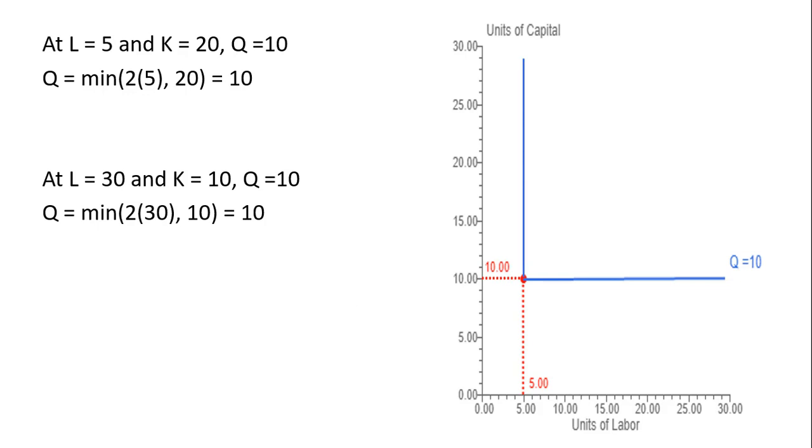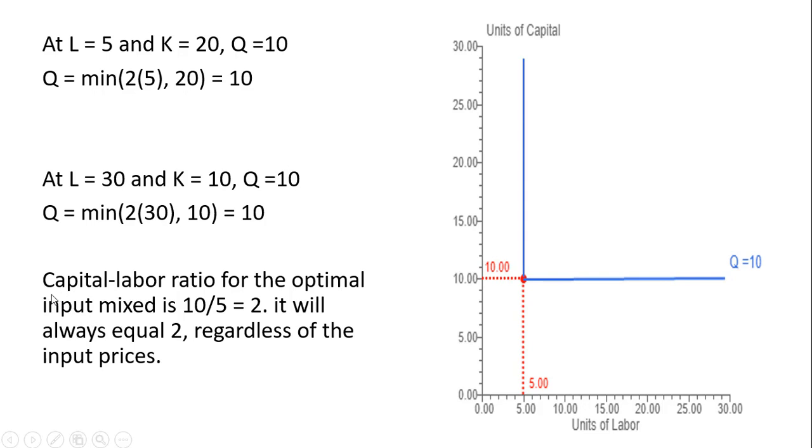All right, let's move on. Another point is that the capital labor ratio for the optimal input mix is 10 divided by 5. So at this elbow here, we got 10 units of capital, 5 units of labor. So 10 divided by 5 is the ideal or optimal input mix. It will always equal 2 regardless of the input prices.